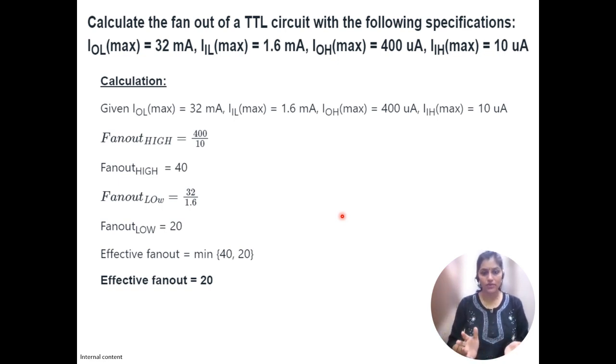As we all are aware, digital systems have two logical levels, zero and one - low level and high level. For calculation, we can calculate high level fan-out and low level fan-out. For calculation of high level fan-out, the formula is high level output current divided by high level input current.